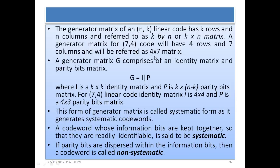The important point is that in the generator matrix, the number of rows must equal the number of information bits and the number of columns must equal the length of the codeword. A generator matrix G comprises an identity matrix and a parity bits matrix: G = [I | P], where I is a k×k identity matrix and P is a k×(n−k) parity bits matrix. For a (7,4) linear code, the identity matrix is 4×4 since k=4, and P is a 4×3 parity bits matrix, since n−k=3.